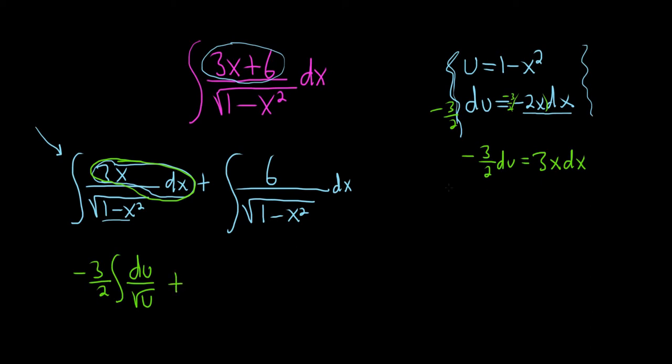This next integral here is actually really easy. There's a formula. If you have 1 over the square root of a squared minus x squared dx, it's an arcsine. This is going to be equal to the arcsine of x over a plus c.